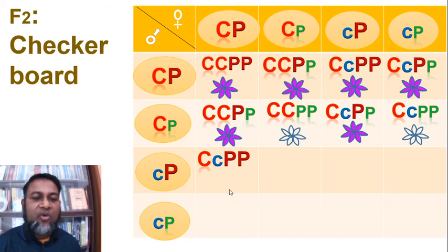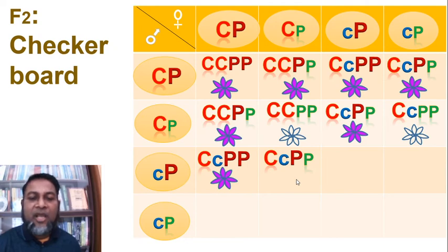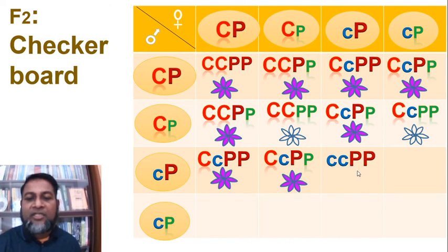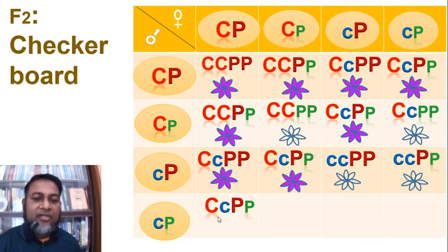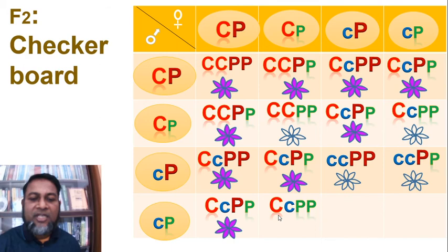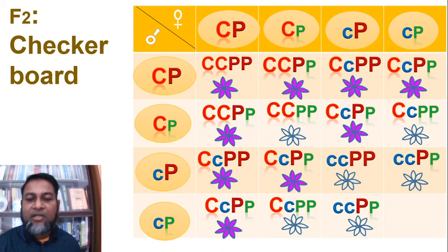Where both C and P genes are dominant, purple color is created. Where only C gene is dominant, white flower is created. Where both C and P are dominant, purple color is created. Where only P gene is dominant, white flower is created. Where both C and P are dominant, purple color is created. Where only C gene is dominant, white flowers are created. Where only P gene is dominant, white flower is created. Where no dominant gene is present, white flower is created.